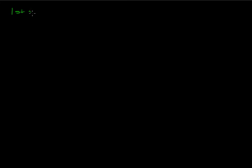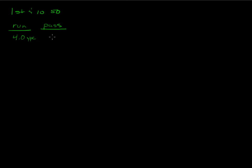Let's say we've got a first and 10 at the 50 yard line. What should we do? Should we run? Should we pass? Well, obviously we should do some of both, right? Unpredictably. Can't do the same thing all the time. But how would we know what we're doing too often or not often enough? Let's say a run on average gets us about 4.0 yards per carry and a pass gets us about 6.5 yards per attempt. In that case we'd say yeah, we'd want to pass more often. That's a bigger payoff.